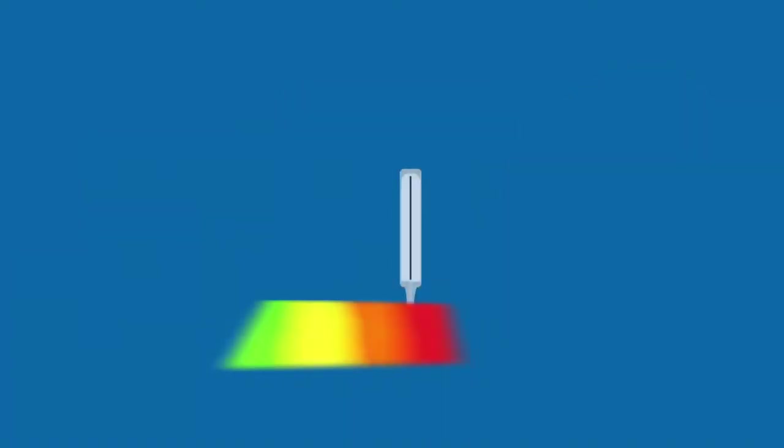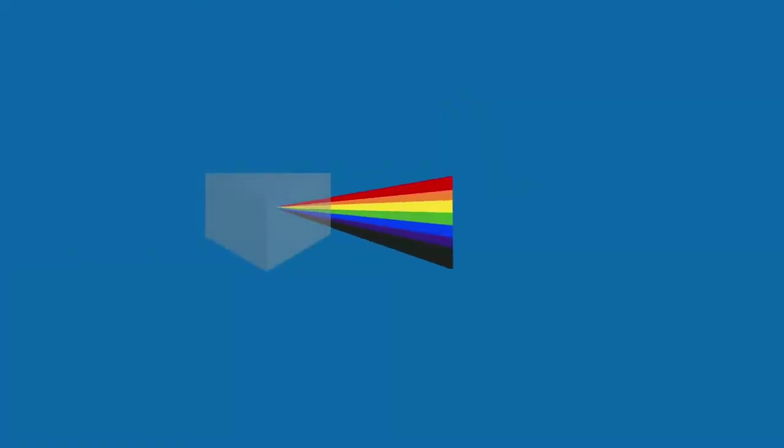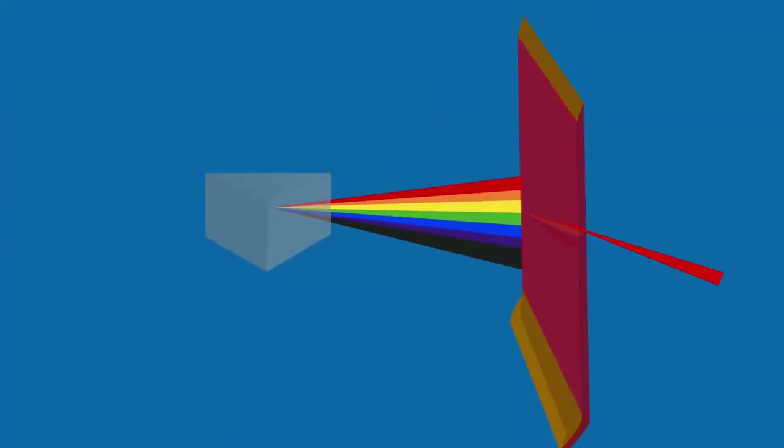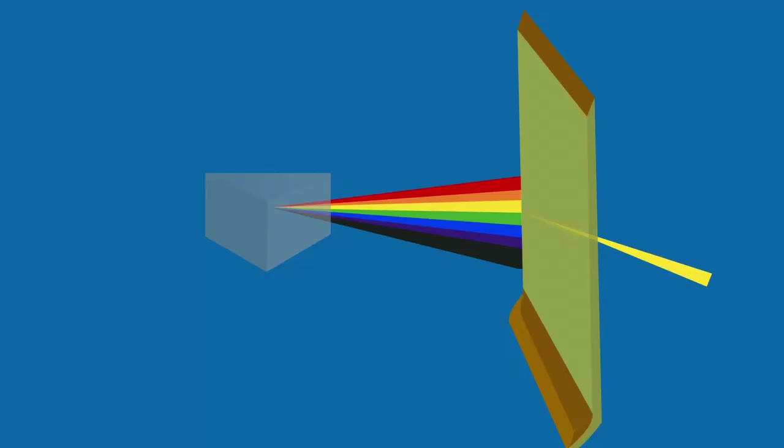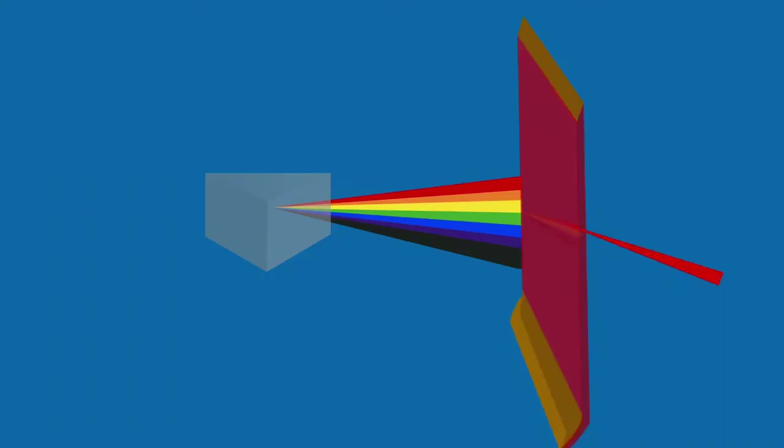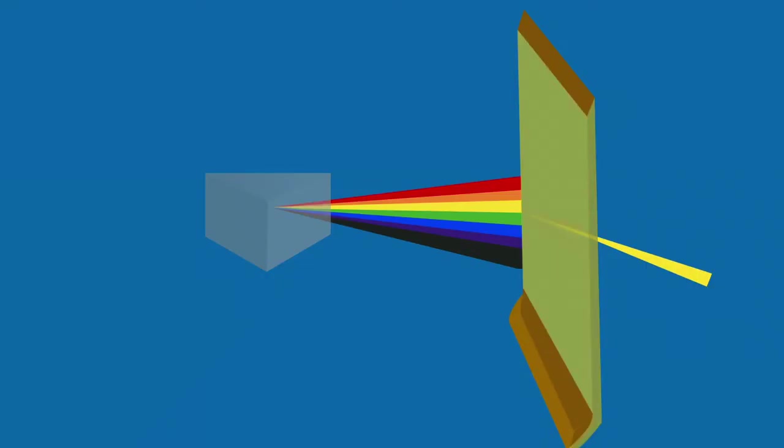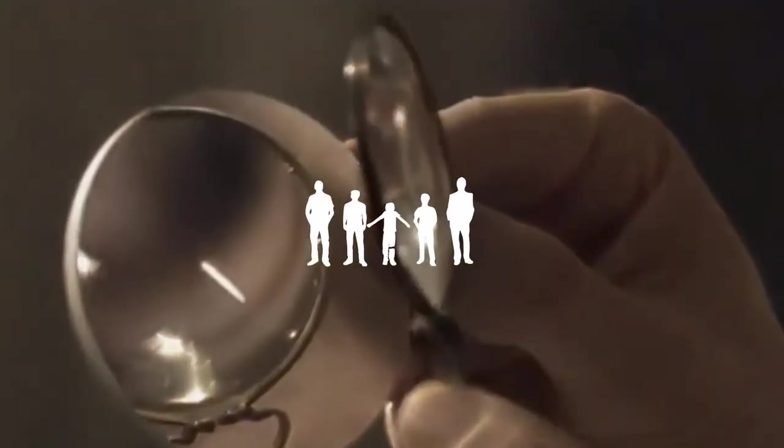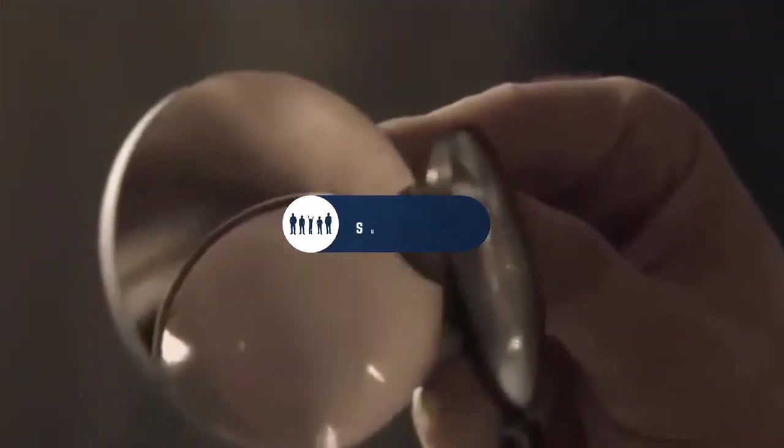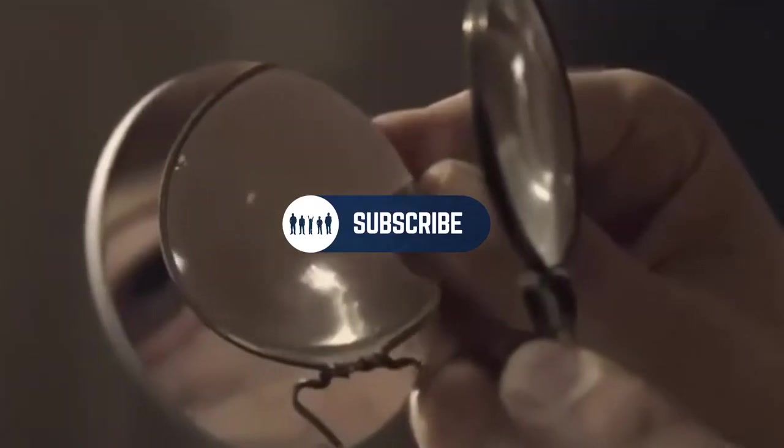After noticing this pattern, Herschel decided to measure the temperature just beyond the red portion of the spectrum, in a region where no sunlight was visible. To his surprise, he found that this region had the highest temperature of all. Herschel's experiment was important because it marked the first time that someone demonstrated that there were types of light that we cannot see with our eyes. What Herschel had discovered was a form of light beyond red light, now known as infrared radiation.